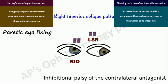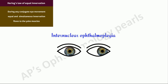Hering's law of equal innervation has been hypothesized as a possible explanation for the dissociated contralateral horizontal gaze-evoked nystagmus in the abducting eye of an internuclear ophthalmoplegia. Increased innervation to the underacting adducting muscle would result in an enhanced stimulus to the contralateral abducting muscle.